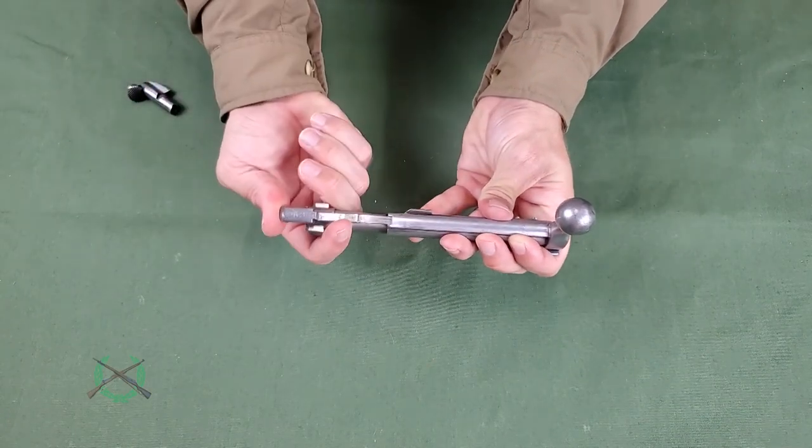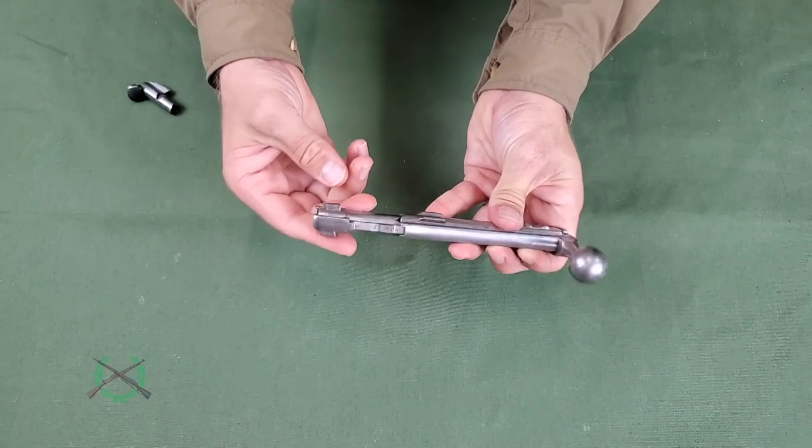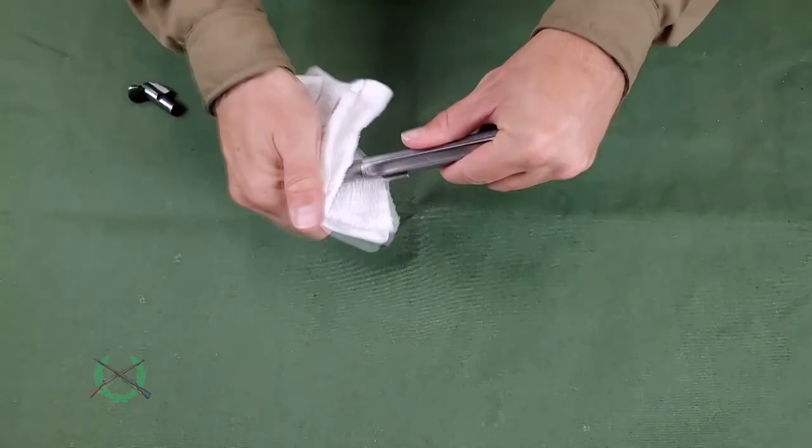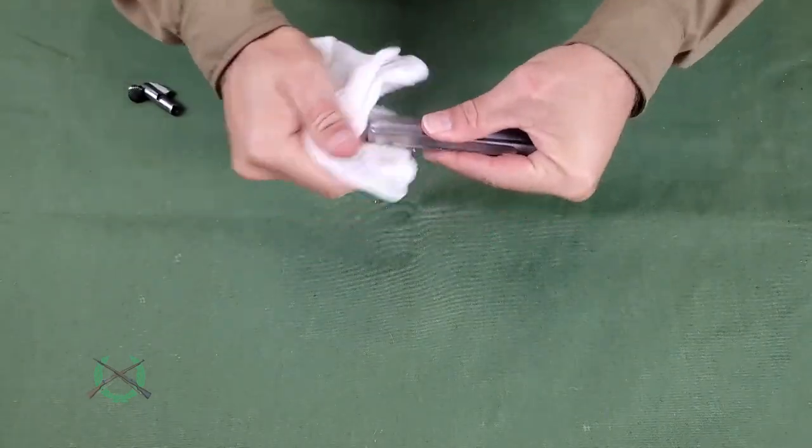Slide the extractor into the extractor groove on the bolt body until it snaps onto the bolt head. Push the bolt head into the body, allowing it to rotate as it is inserted.